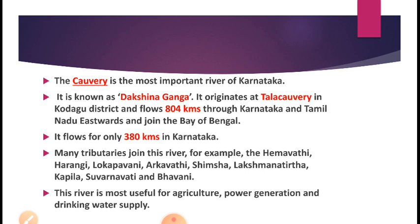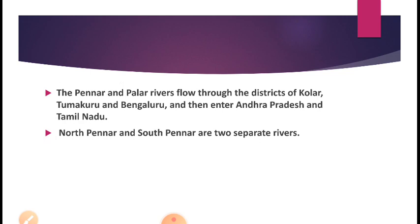Same as river Krishna, Kaveri also creates a number of tributaries. They are Hemavati, Harangi, Lokapavani, Arkavati, Shimsha, Lakshmana Tirtha, Kapila, Subhavathi, and Bhavani. Water of this river is used for different purposes — agriculture, power generation, and drinking. Along with Krishna and Kaveri, two more important east flowing rivers are there in Karnataka: Palar and Pennar.